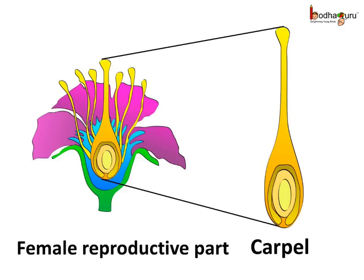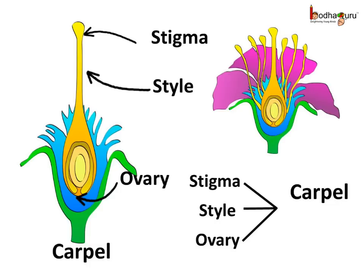In the centre of the flower rises a flask-like structure which is the pistil or the carpel. The carpel is the female reproductive part of the flower. The base is slightly swollen and it is called the ovary. Then there is a short tube-like upper part called the style. And on top of the style there is a hat-like part called the stigma. So the carpel or pistil consists of the ovary, style, and stigma.